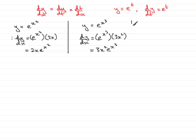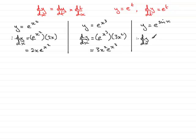What about a trig one? Let's say y equals e to the sine x. In the same way, t will be sine x, so y equals e to the t. Differentiating via the chain rule, dy by dx equals dy by dt, which is e to the t or e to the sine x, multiplied by the differential of sine x, which is cos x.